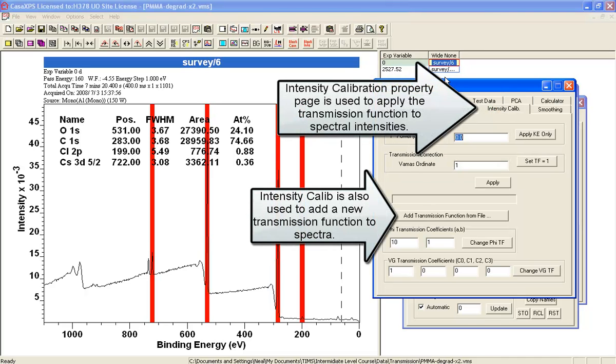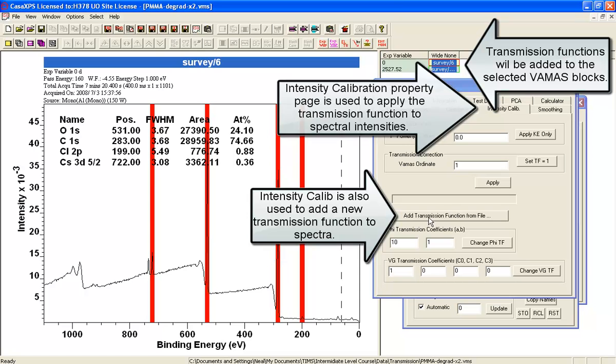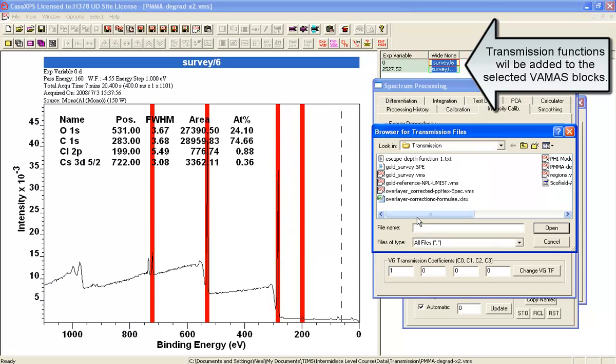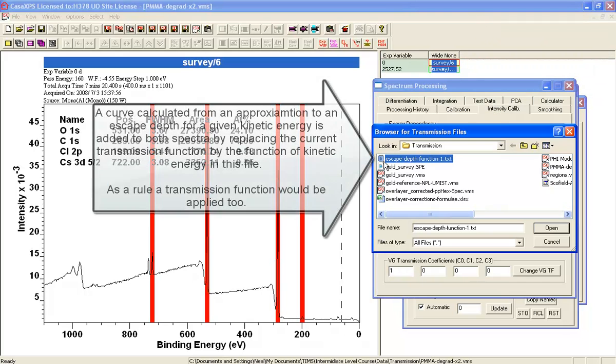I'm going to select both of these because I want both spectra updated at once. I'm going to add a transmission function, and this transmission function is simply based on escape depth.